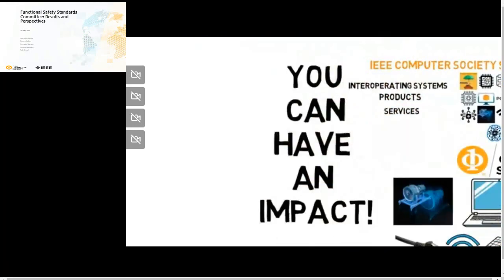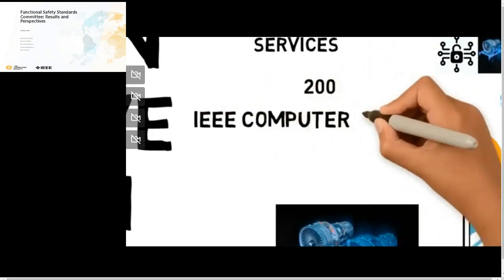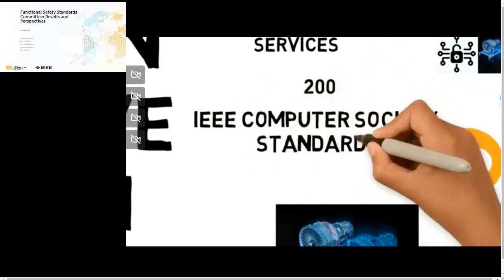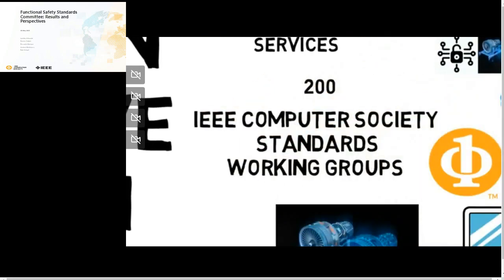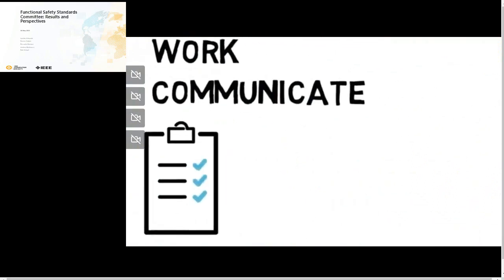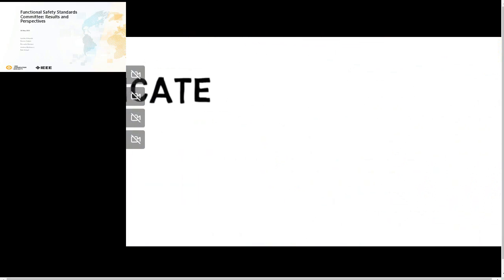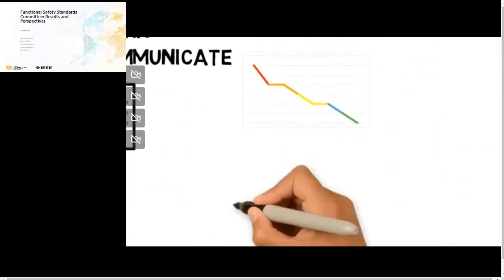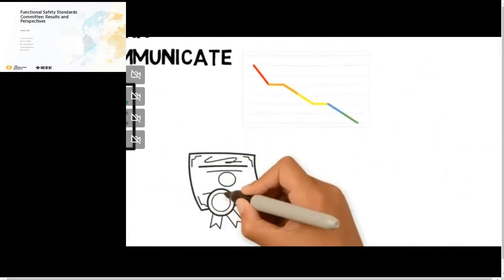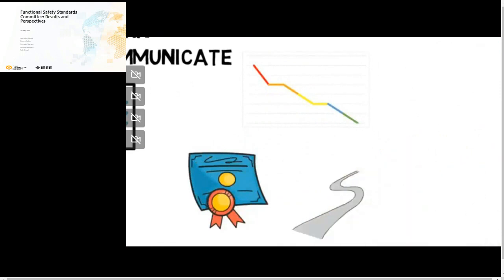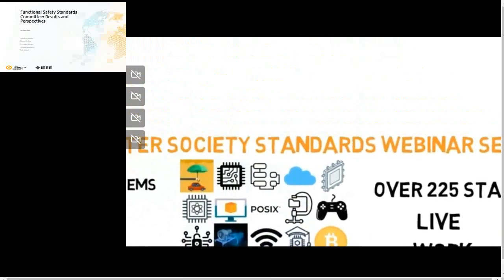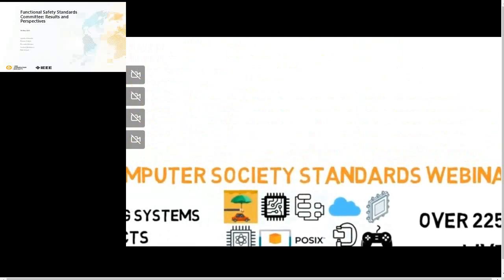You can have an impact by joining one of the over 200 IEEE Computer Society Standards Working Groups. Participating in one of the working groups grants you access to information that reduces risks, increases proficiency, and shapes the future of the industry. Help determine what's next in computing technology. Learn more about our standard working groups at computer.org.